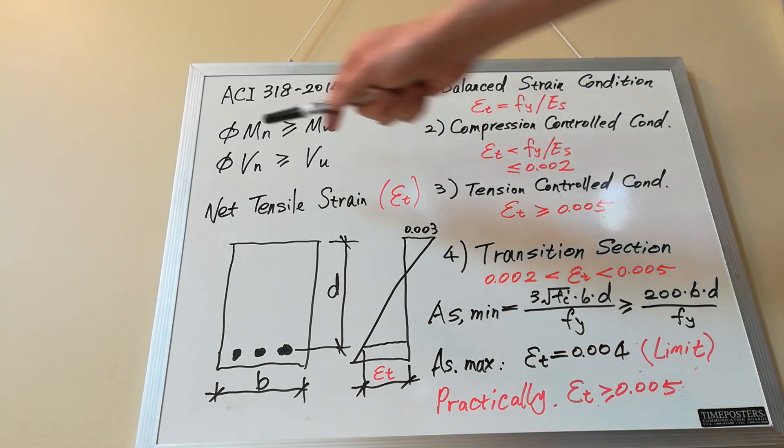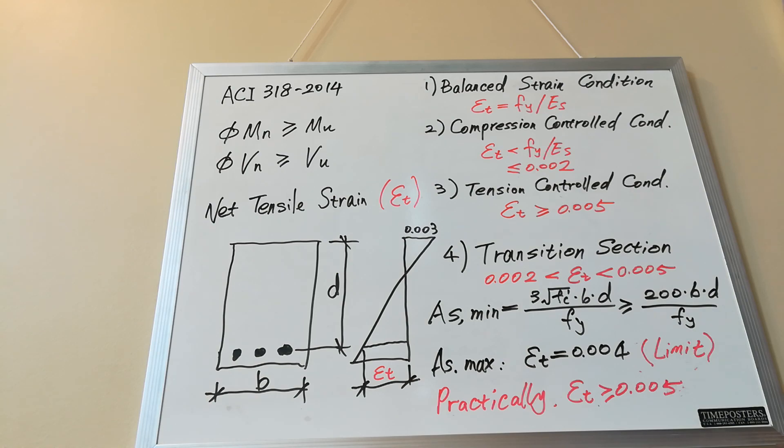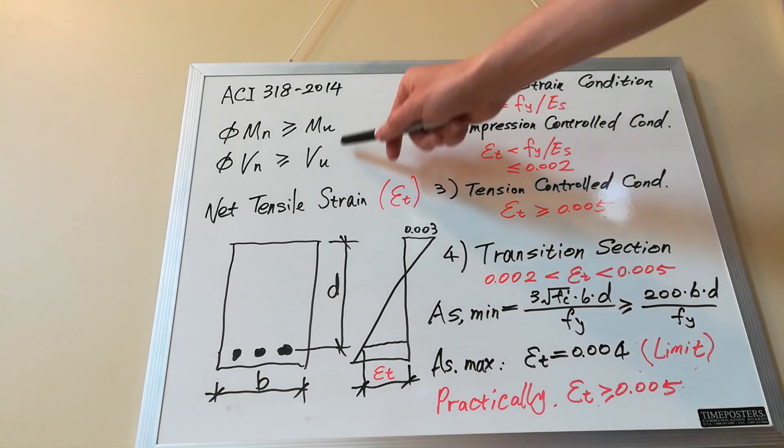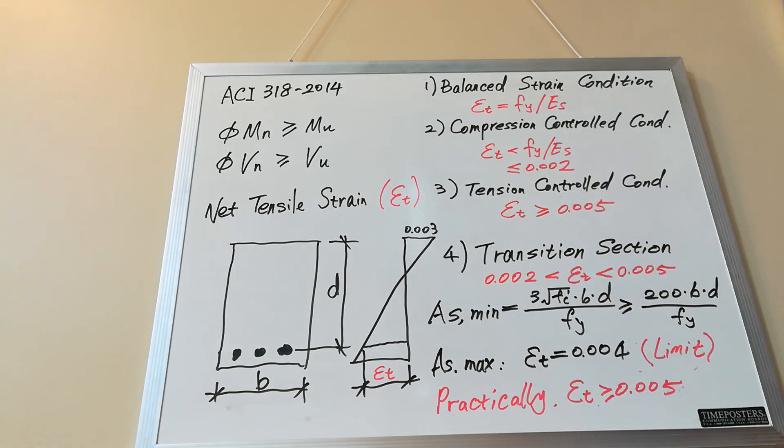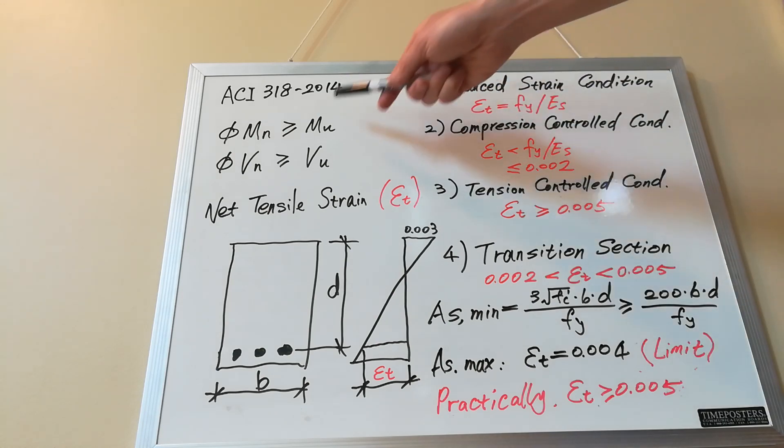Phi here is the strength reduction factor. MN and VN are nominal moment and shear strength respectively. They can be taken as the theoretical strength according to specified dimensions and material properties. MU and VU are moment and shear due to factored loads, usually retrieved from structural analysis by load combinations.